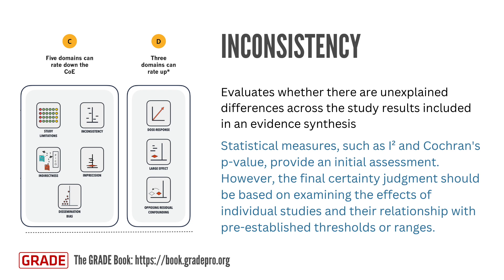Inconsistency: This domain evaluates whether there are unexplained differences across the study results included in an evidence synthesis. By definition, if only one study is available, there is no concern about inconsistency. If inconsistency can be explained by a small number of a priori subgroup hypotheses, GRADE users may choose to stratify the evidence on the basis of these factors. However, if the inconsistency remains unexplained, the certainty of the evidence should be rated down. Statistical measures such as I-squared and Cochrane's Q p-value provide an initial assessment, but the final judgment should be based on examining individual study effects and their relationship with pre-established thresholds or ranges.